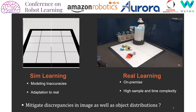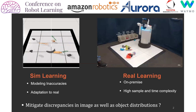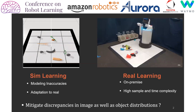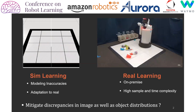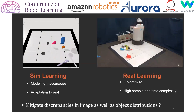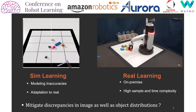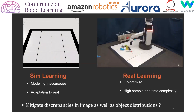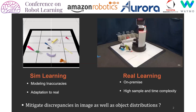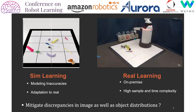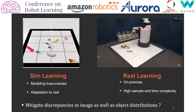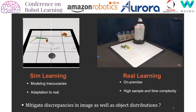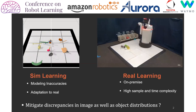In this work, we investigate how to mitigate these discrepancies between image and object distributions for vision-based decluttering. In contrast to widely used domain randomization approaches that naively treat the discrepancy between the domains as variability in the simulation parameters, we focus on sample-efficient domain adaptation to learn invariant feature representations for transferring to a new environment.